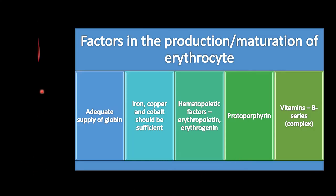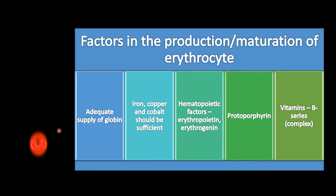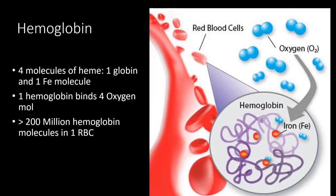Several factors affect the production or maturation of erythrocytes. First, an adequate supply of globin is important since almost one-third of RBC mass is hemoglobin. Together with globin, iron is needed. Hematopoietic factors — primarily erythropoietin — stimulate hematopoiesis. Protoporphyrins may inhibit it. For synthesis, B-complex vitamins are needed, primarily B12 and other B-complex vitamins.